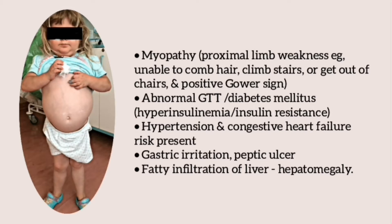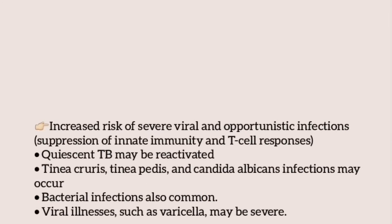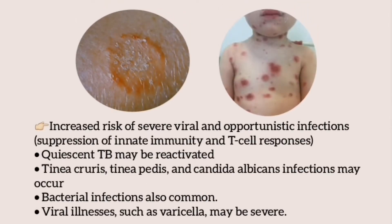These children have characteristic myopathy — proximal limb weakness — and are unable to comb their hair, climb stairs, or get out of a chair; they have a positive Gower sign. Glucose tolerance is abnormal or frank diabetes mellitus may be present, with hyperinsulinemia and insulin resistance. There may be hypertension and congestive heart failure. Gastric irritation, peptic ulcer, and fatty infiltration of the liver may also be present. There is increased risk of severe viral and opportunistic infections due to suppression of innate immunity and T-cell responses.